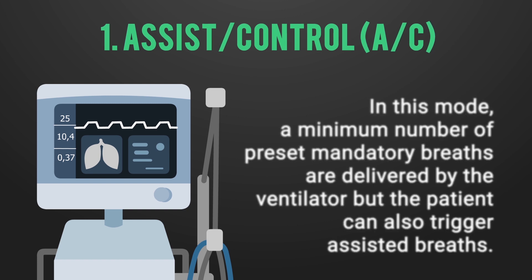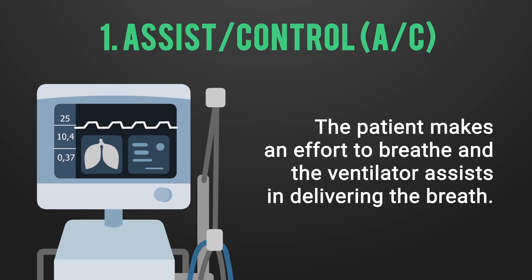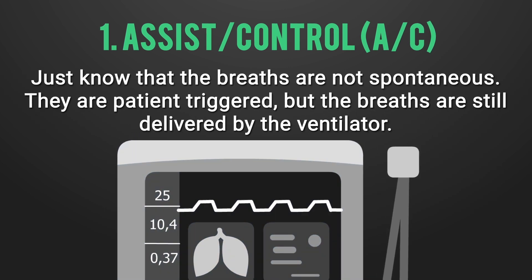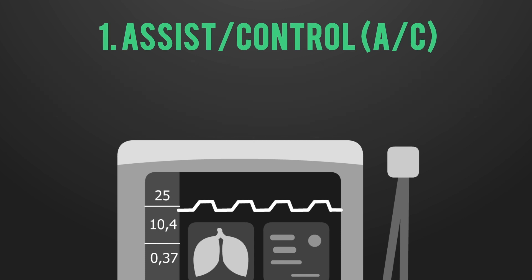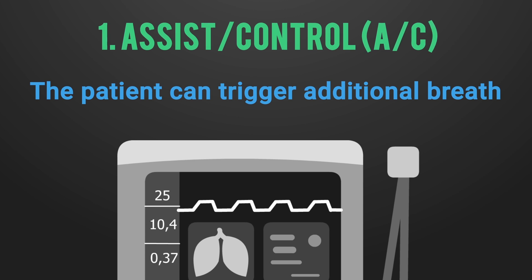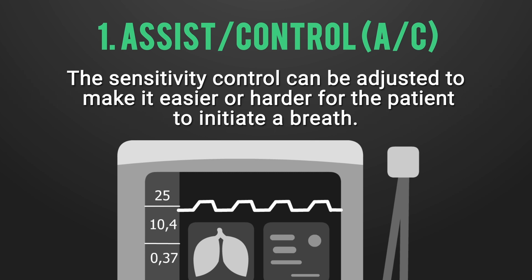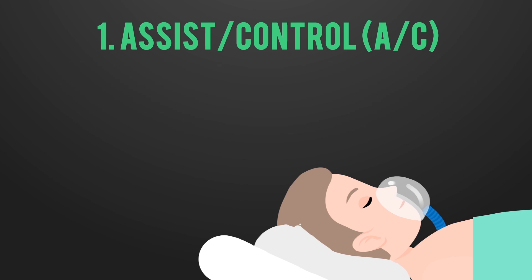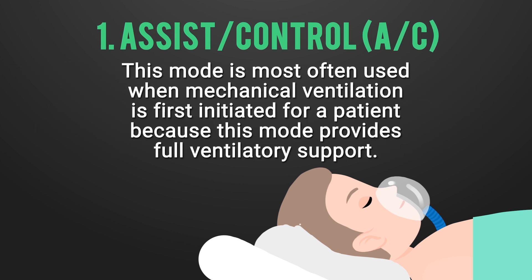Assisted breaths occur when the patient makes an effort to breathe and the ventilator assists in delivering the breath. The breaths are not spontaneous in this mode — they can be patient-triggered, but they are still delivered by the ventilator. That is where it gets its name: Assist Control. The mandatory breaths are preset (controlled), and the patient can trigger additional assisted breaths. The sensitivity setting can be adjusted to make it easier or harder for the patient to initiate a breath.